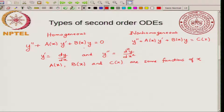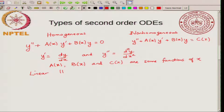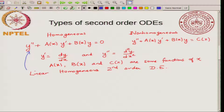The equation is called homogeneous because each term has y or any of its derivatives to the power of 1. The second derivative term is to power 1, the first derivative is to power 1, and y itself is to power 1, so the power of y or any derivative is the same for each term. This type of equation is called a linear homogeneous second order differential equation.